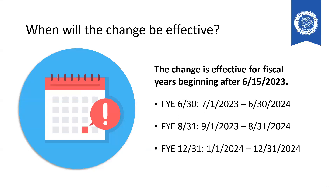When will this change be effective? The change is effective for fiscal years beginning after June 15, 2023. So if your fiscal year end is June 30, this change will be effective for your reporting year July 1, 2023 through June 30, 2024. Similarly, if you have an August 31st fiscal year end, this change will cover September 1st, 2023 through August 31st, 2024.